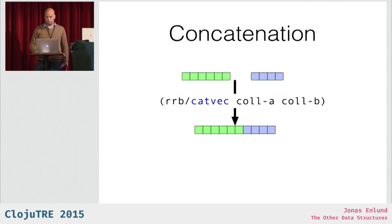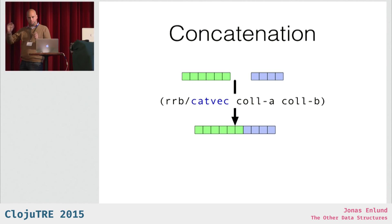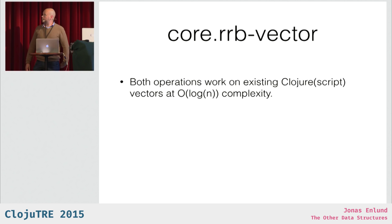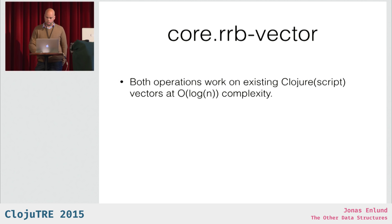The other operation is concatenation — fast logarithmic time concatenation. Clojure vectors can only grow one element at a time at the end, so if you concatenate two Clojure vectors it's going to be linear. But this is logarithmic time. And the amazing thing is these two operations work on existing Clojure vectors at better performance complexity. So when you call catvec on ordinary Clojure vectors, you don't get Clojure vectors back, but you get these RRB vectors back.